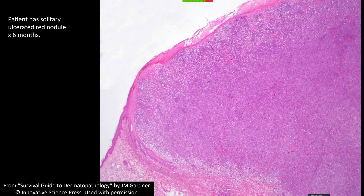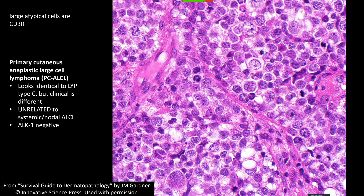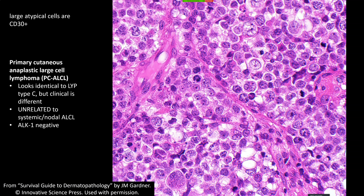Now this patient has a single ulcerated nodule that's been there six months — a huge mass with sheets of ugly cells. Of course they're diffusely CD30-positive, so this is going to be primary cutaneous anaplastic large cell lymphoma. It looks microscopically identical to LyP Type C. The only way to really distinguish them is over time: multiple lesions that come and go suggests LyP Type C, while a solitary lesion suggests primary cutaneous ALCL, though sometimes they can get multiple lesions or regress on their own.